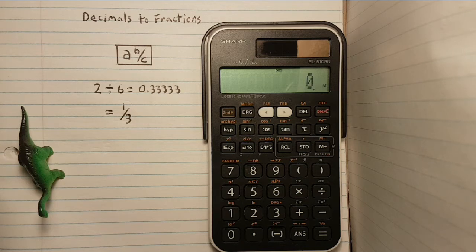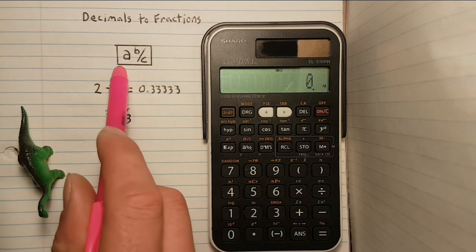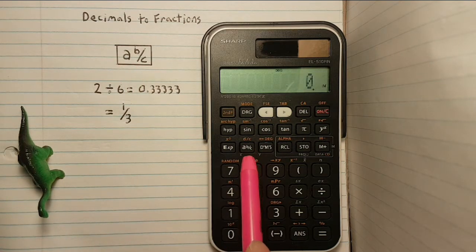Fractions can be very useful for simplifying long or complex decimals. To do this we will use the A B over C button which is found here.